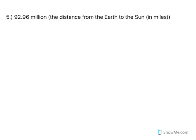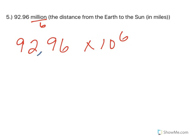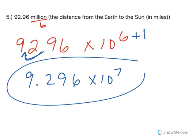Number 5, 92.96 million is the distance from the Earth to the Sun in miles. Million means 6, so that's 92.96 times 10 to the 6th. And you're saying, hey, that's wrong. You're right, it is, because 92 is bigger than 10. I'm going to move it one place, and because it's large, I'm going to add that one place to my exponent. So, 9.296 times 10 to the 7th.